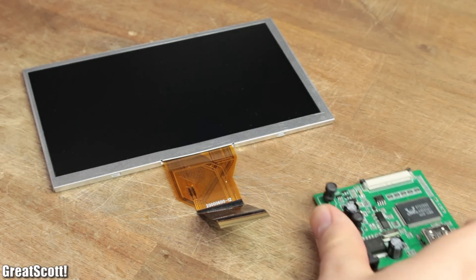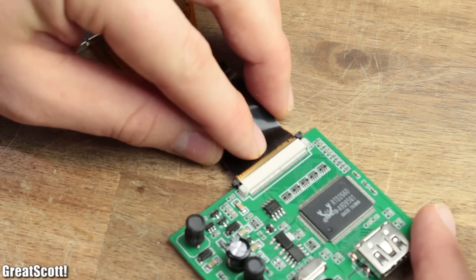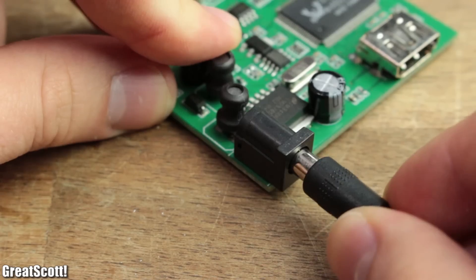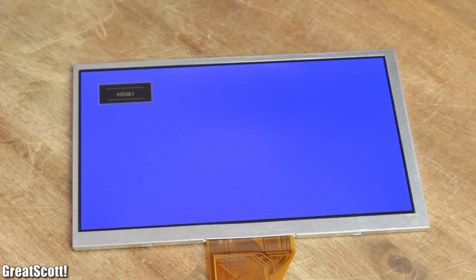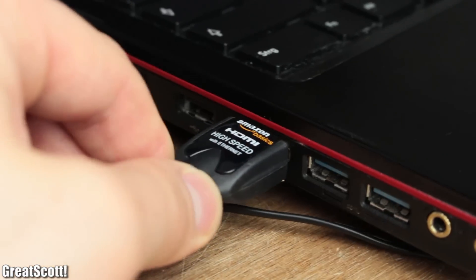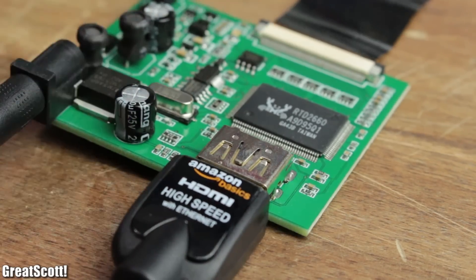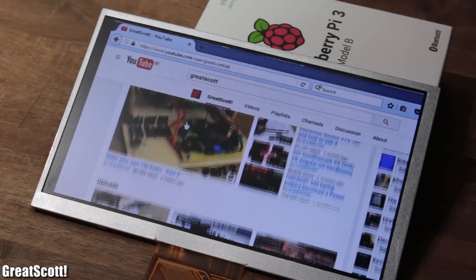For a previous project I got myself the 7 inch 800 x 480 LCD screen kit. Only problem was and still is that no matter which video resolution I try out, a part of the screen is not visible on the LCD.